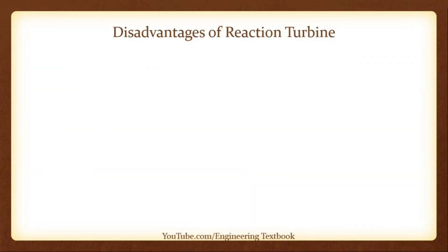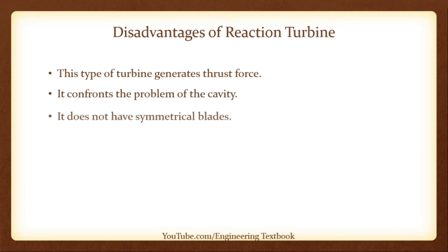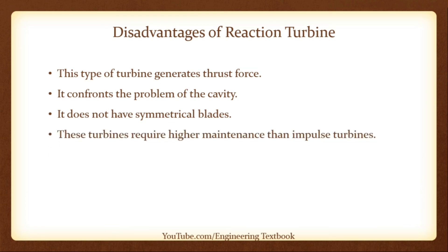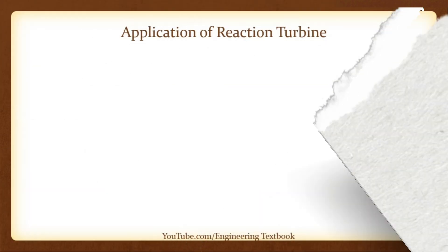Disadvantages of Reaction Turbines: this type of turbine generates thrust force, confronts the problem of cavitation, does not have symmetrical blades, requires higher maintenance than impulse turbines, and incurs higher maintenance costs.